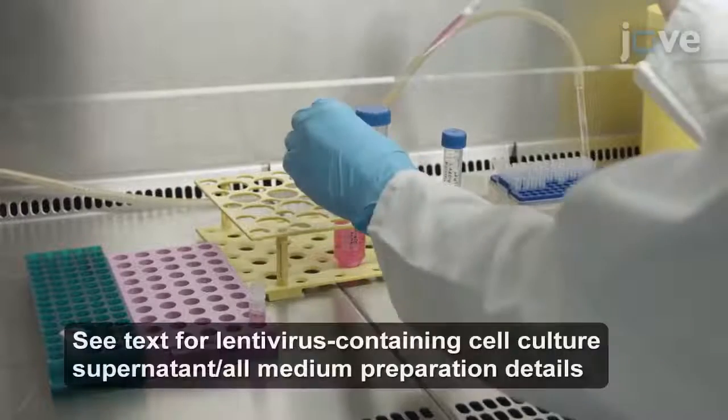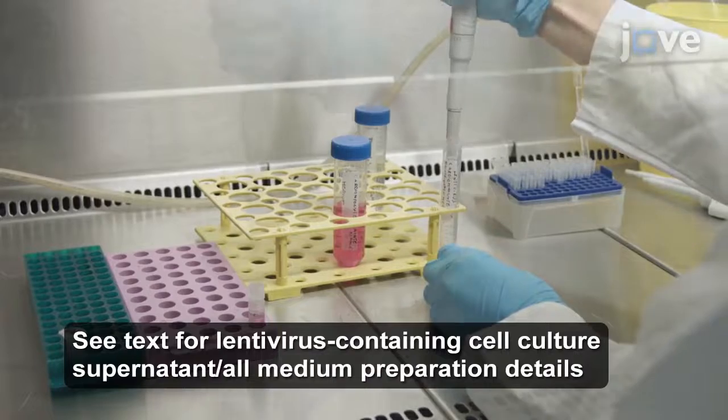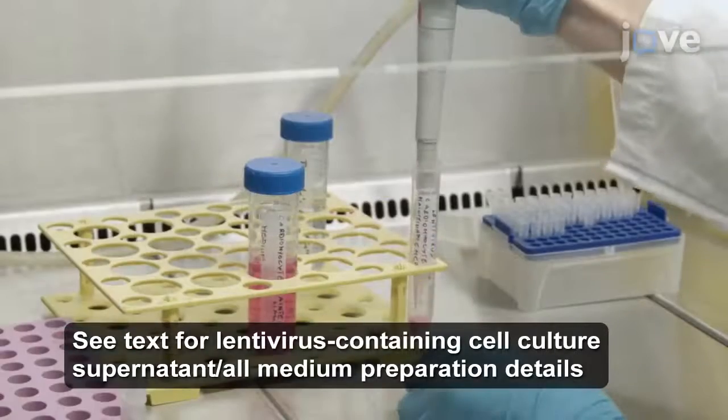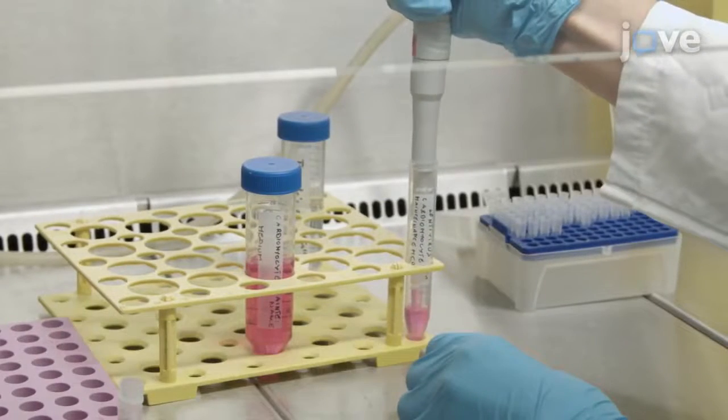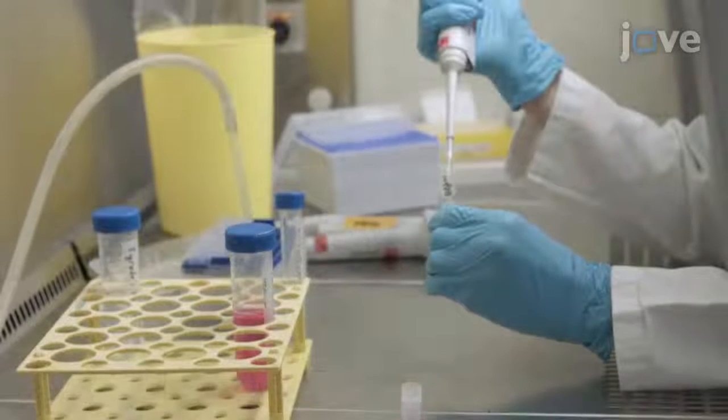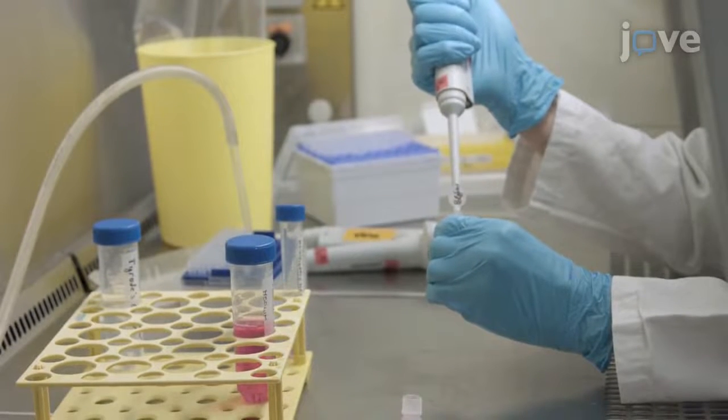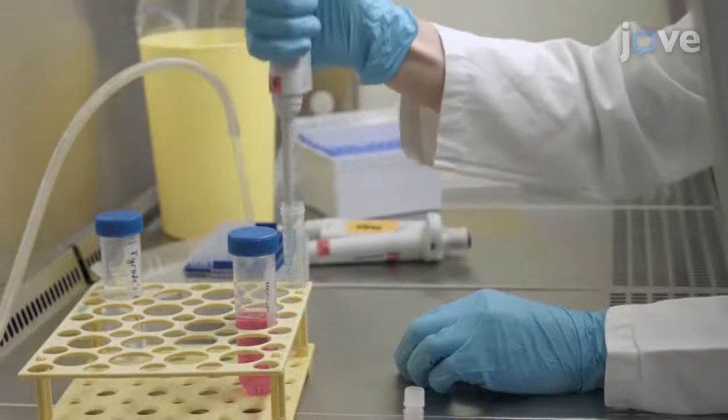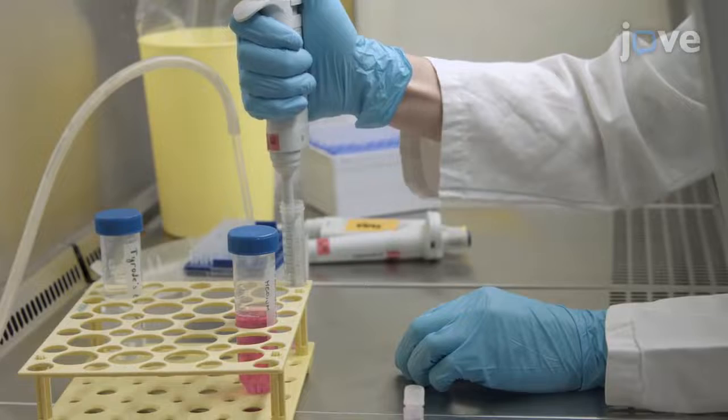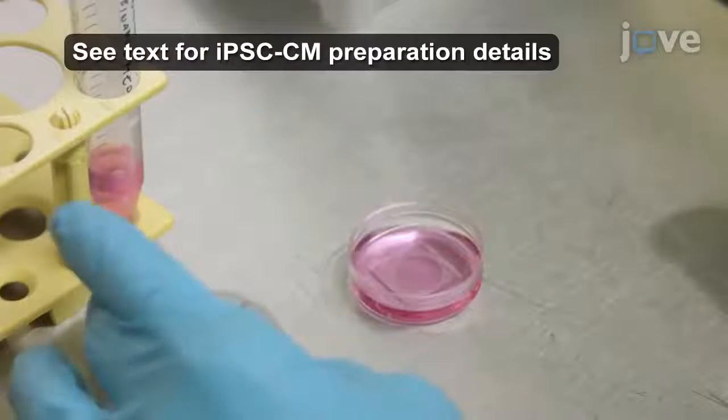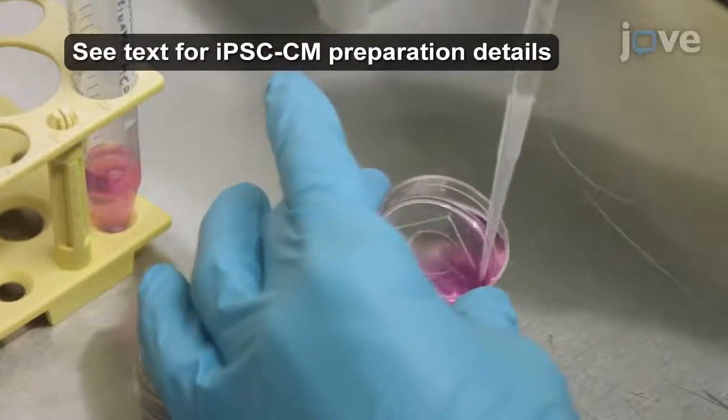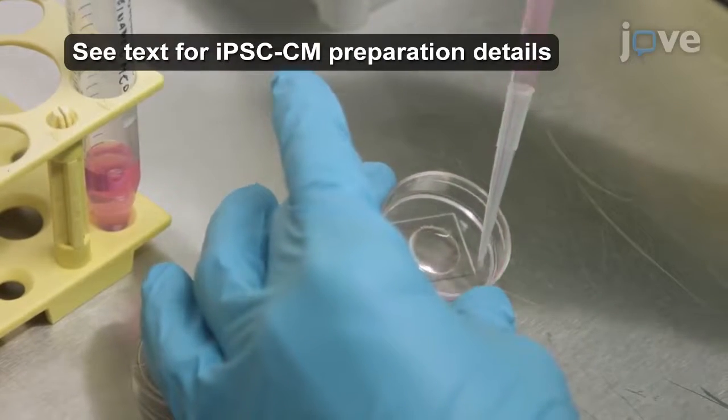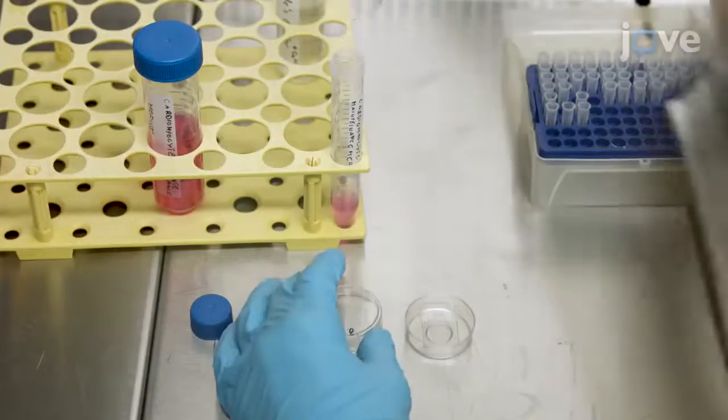Begin by mixing lentivirus-containing cell culture supernatant with cardiomyocyte maintenance medium at a 1 to 1 ratio. Add hexadimethrin bromide at a final concentration of 8 micrograms per milliliter to enhance the infection efficiency, and replace the cardiomyocyte maintenance medium in the IPS cell-derived cardiomyocyte culture dish with the infection medium.